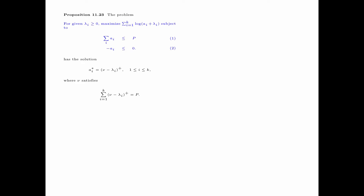We now discuss Proposition 11.23, which states that for given lambda i greater than or equal to 0, maximize the summation i equals 1 up to k of log of ai plus lambda i, subject to summation i of ai less than or equal to p and minus ai less than or equal to 0. The solution is ai star equals nu minus lambda i plus for all i, where nu satisfies summation i equals 1 up to k of nu minus lambda i plus equals p. Here ai plays the role of pi, and lambda i plays the role of ni in the context of parallel Gaussian channels. The proof of this proposition can be skipped on a first watching of this video.